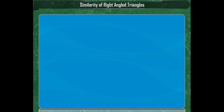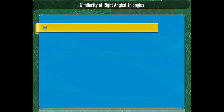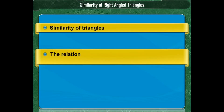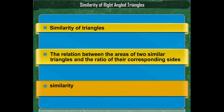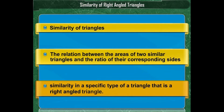Similarity of Right-Angled Triangles. So far we have learnt the similarity of triangles, the relation between the areas of two similar triangles and the ratio of their corresponding sides. Now we are going to study similarity in a specific type of triangle, that is a right-angled triangle.